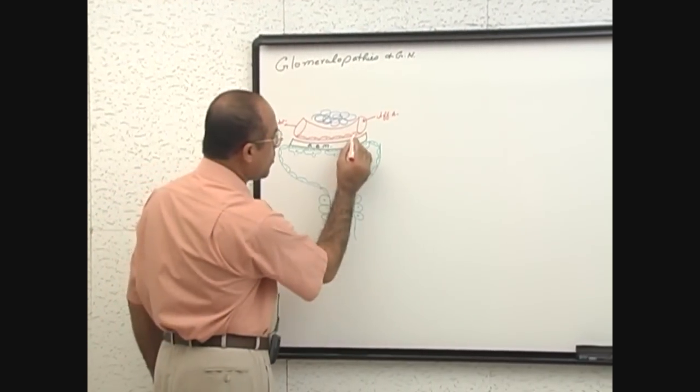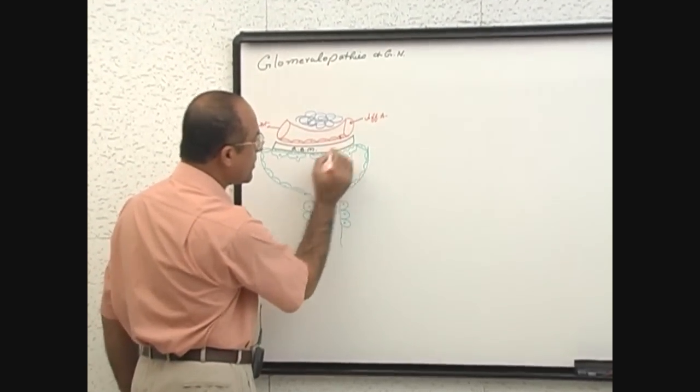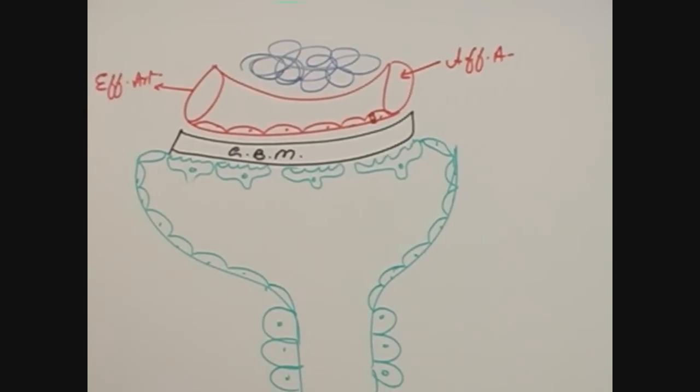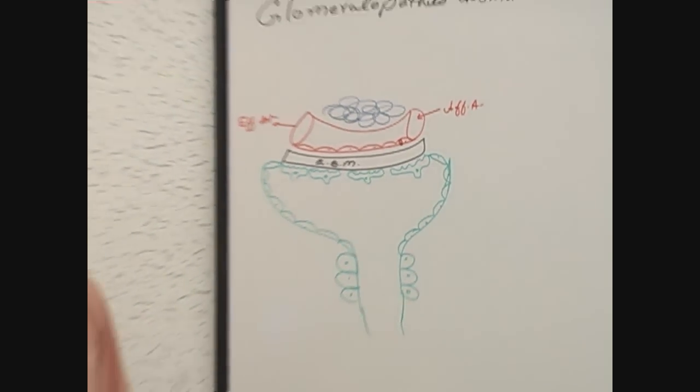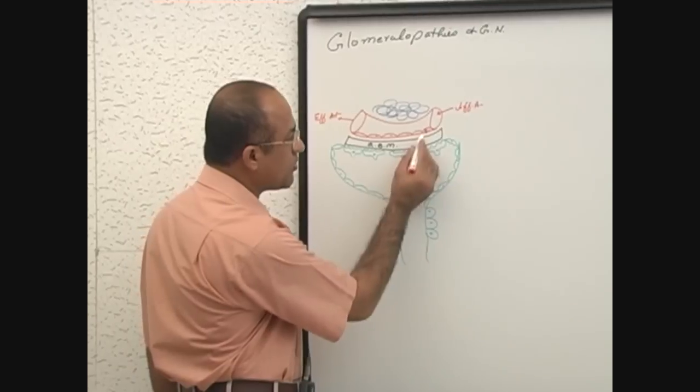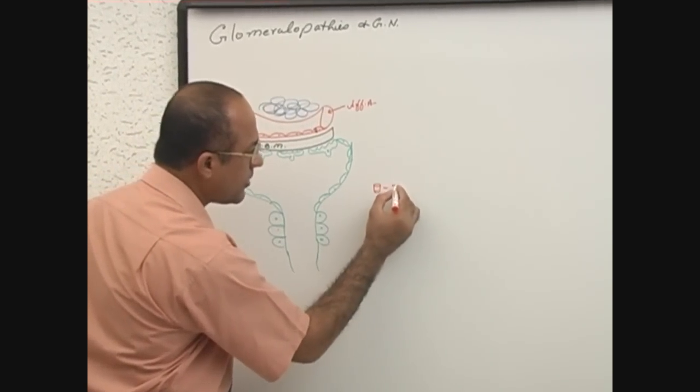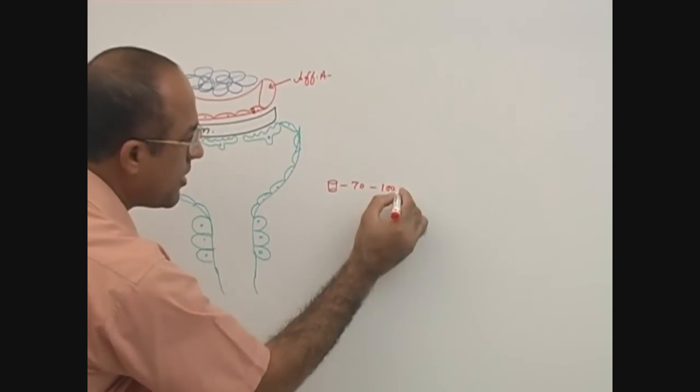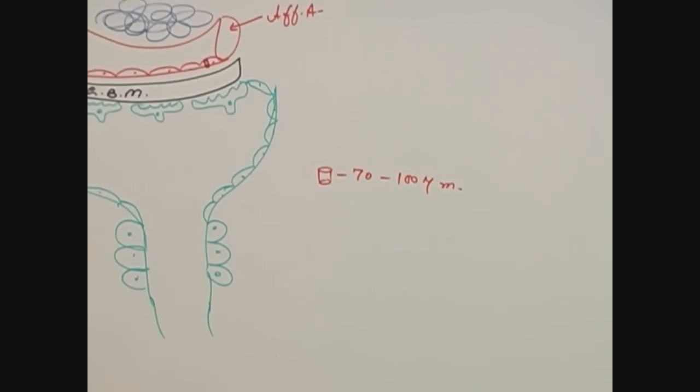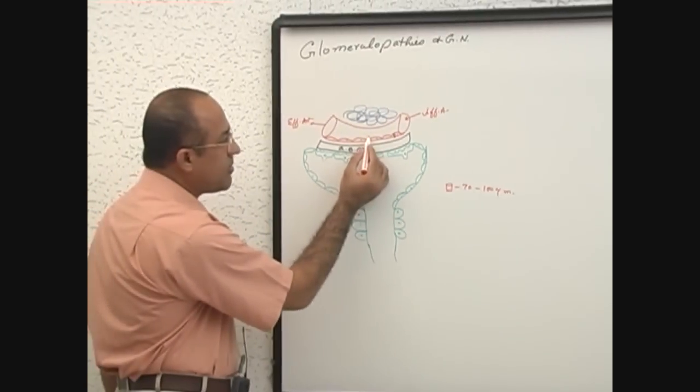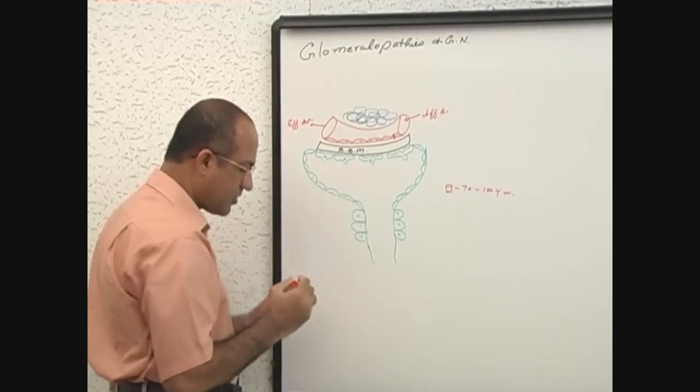And one fenestration, for example, this is one fenestration but there are thousands and thousands of fenestrations present in every endothelial cell. This fenestration, one fenestration has a size of about 70 to 100 nanometer. So this is the fenestration size.